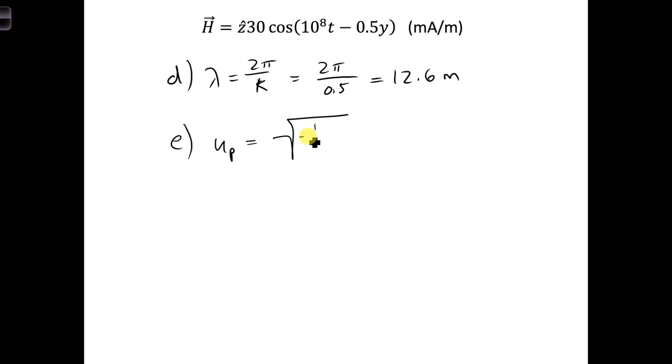So that's 1 over square root of mu epsilon. So mu here is just mu naught, because we were given that the material is non-magnetic. And epsilon is epsilon naught times epsilon r.